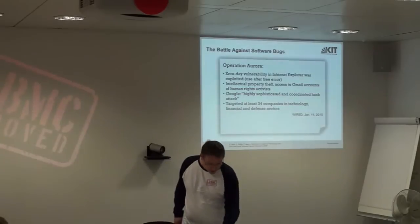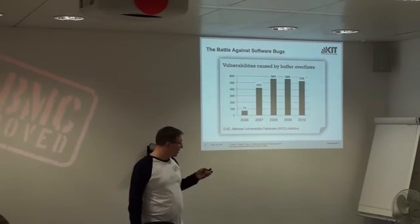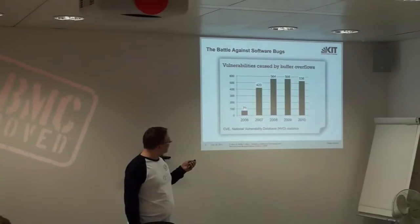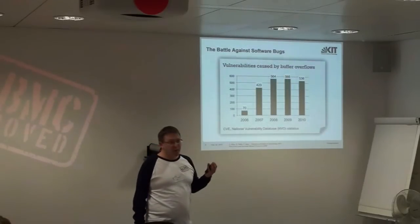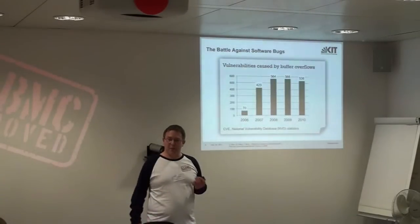In total, 35 companies from all different industry sectors were affected by this attack. This is not a special case — it's quite general. A figure showing the number of vulnerabilities caused by buffer overflows illustrates this: in 2008 there were more than 500 such vulnerabilities for which an exploit was known, caused by buffer overflow problems. This number is not going down very fast, so the situation is not getting much better over time.